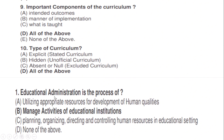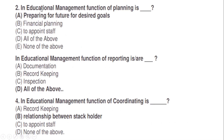Educational administration is the process of: correct option B — managing activities of educational institutions. In educational management, the function of planning is: correct option A — preparing for the future for desired goals.